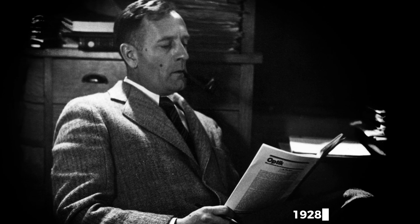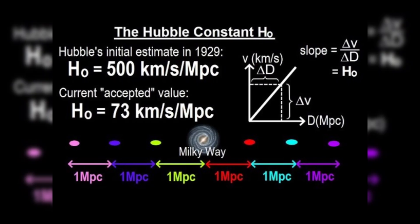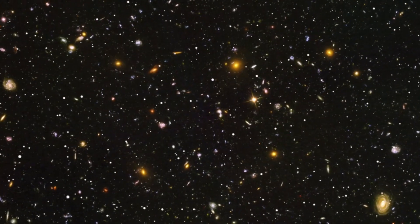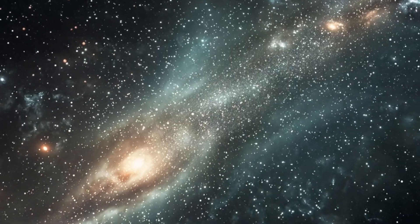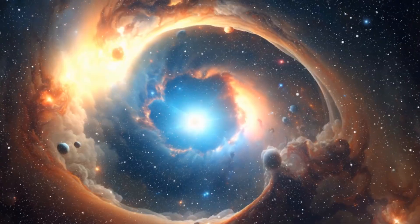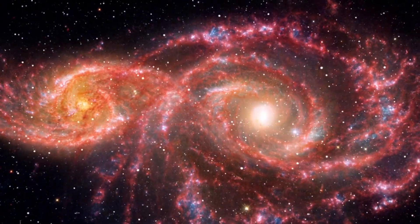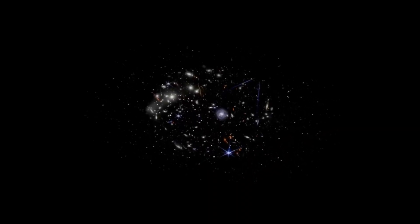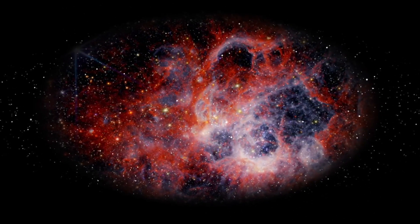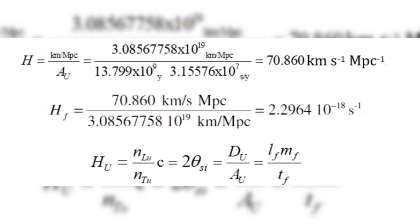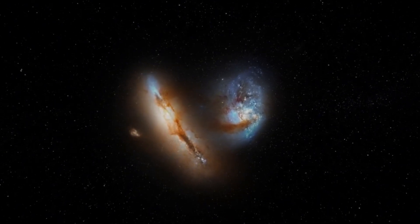Fast forward to 1928, when Edwin Hubble's meticulous measurements of distant galaxies unveiled a startling revelation. The universe was not static, but was uniformly expanding. This groundbreaking observation implied that the universe must have a finite age, and it could be estimated by mathematically reversing the expansion process to trace back to its origin.